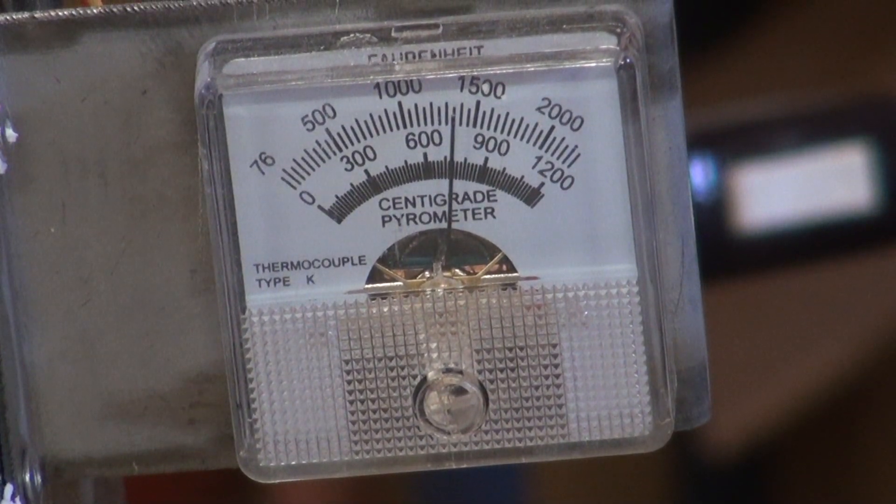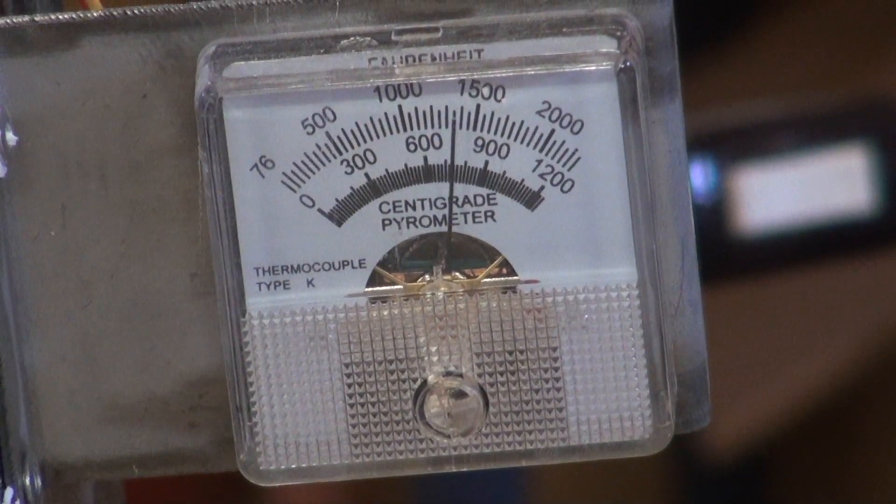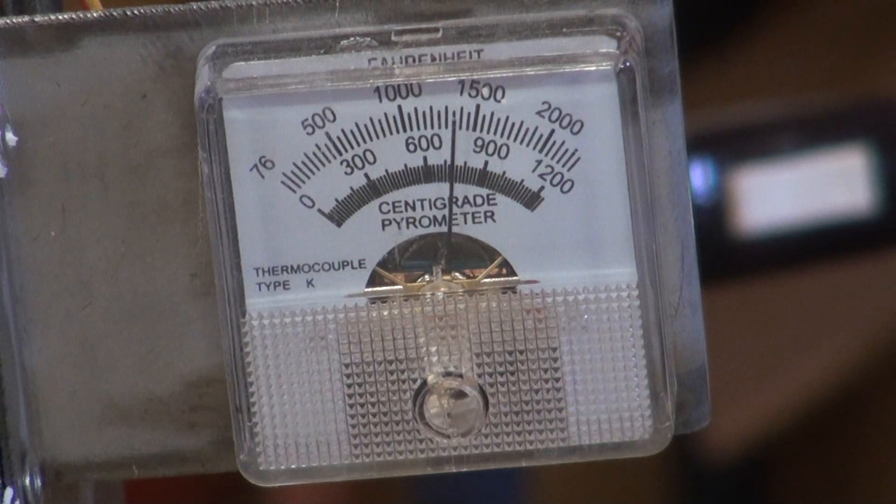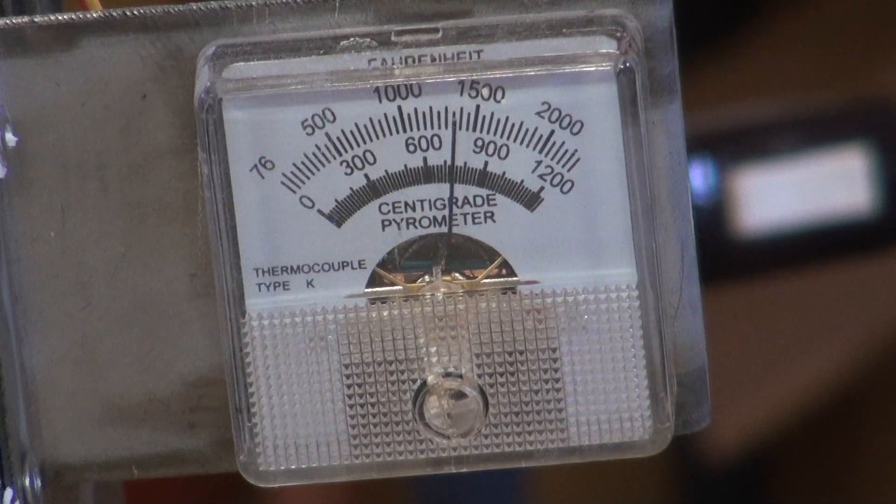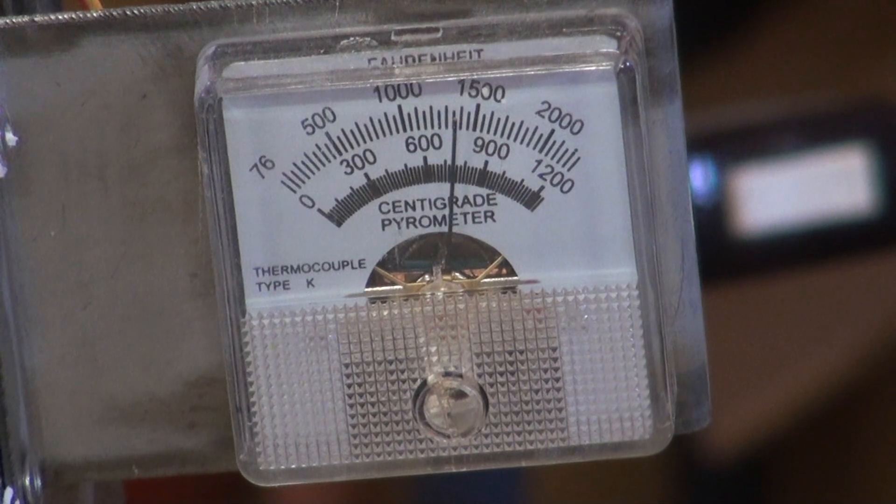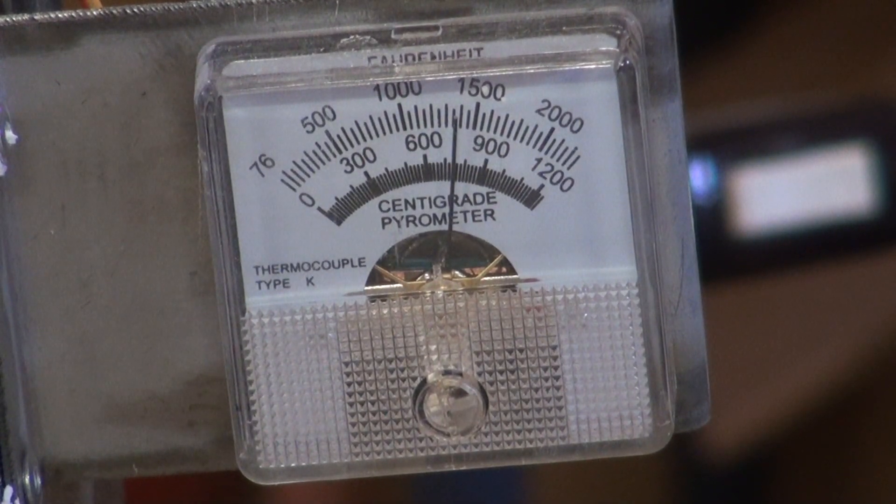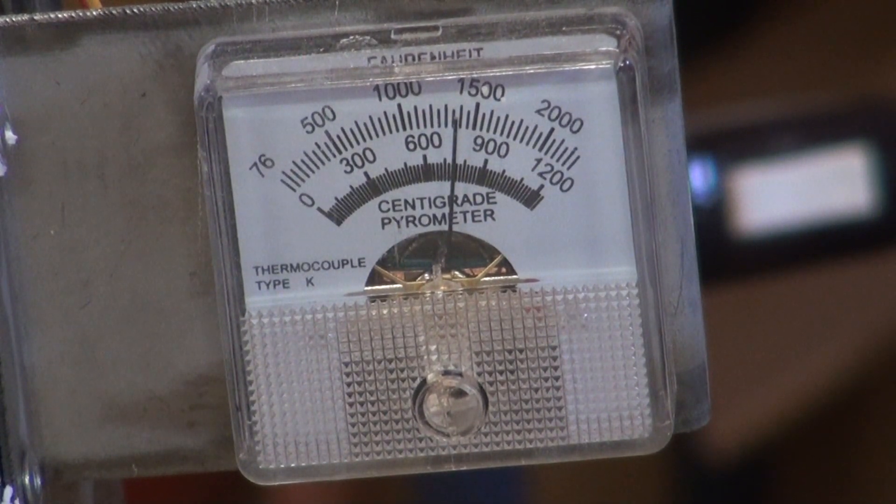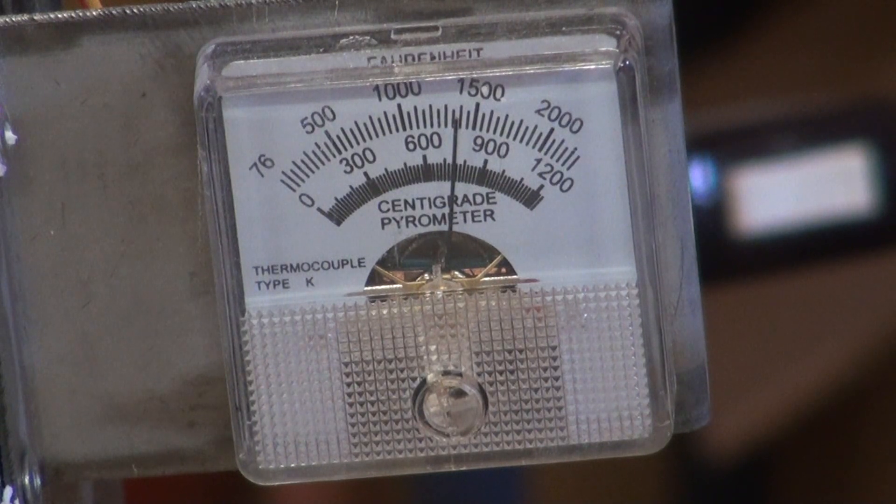It's been seven minutes since we turned the kiln on. And you can see it's almost up to 1400 degrees. We're going to take it up to about 1800 degrees, get it good and hot so that it can melt down. And then we'll shut it off.